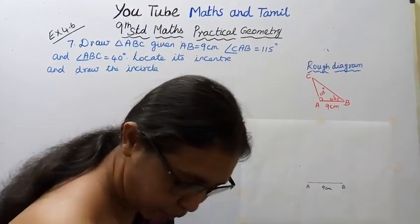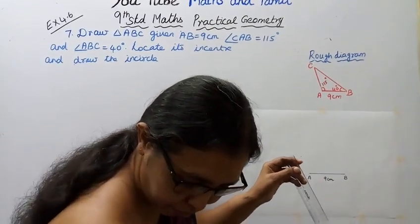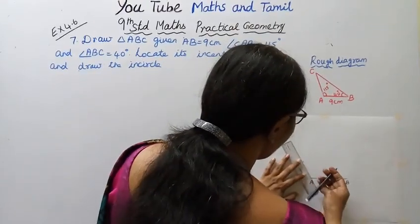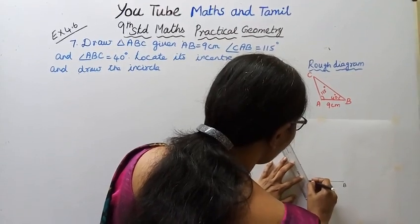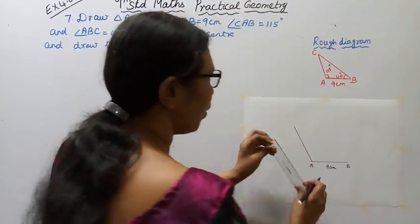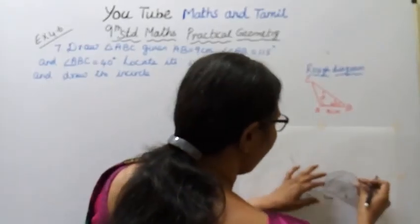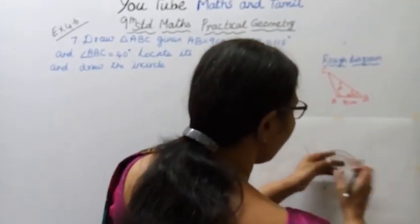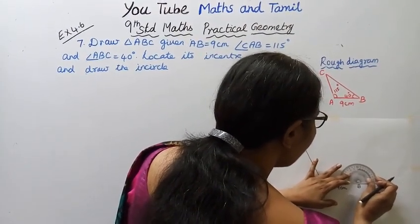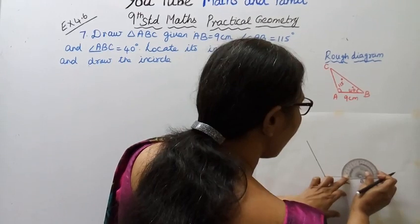Fix the compass reading. Confirm it is 115 degrees. Now check and mark angle B. Angle B is 40 degrees — that is an acute angle. Set the compass to zero at B and mark 40 degrees.